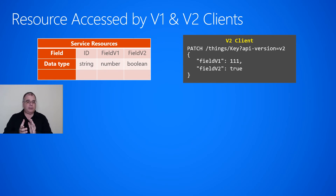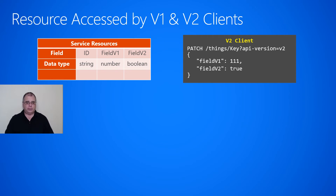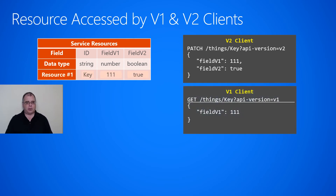Now let's put this all together including versioning. In the top left corner I show some service resources — there are three fields: an ID field, a field introduced in version 1, and a field introduced in version 2. The ID is a string, the v1 field is a number, and the v2 field is a boolean. A version 2 client does a PATCH operation to the things collection to create a resource with key as its ID, passing API version equal to v2. Because it's a version 2 client, it sets the v1 field to a number and the v2 field to a boolean, creating the entry in the resource.